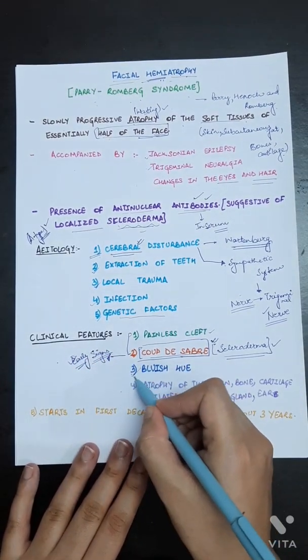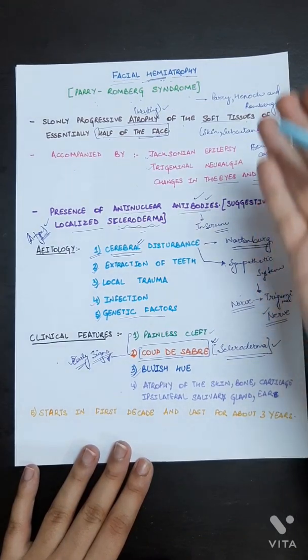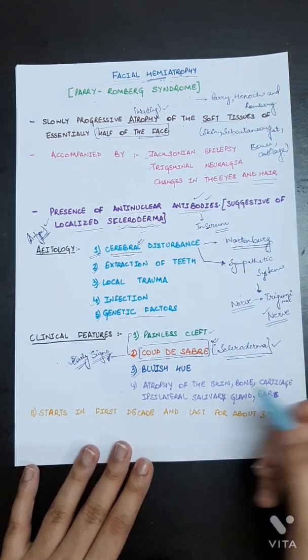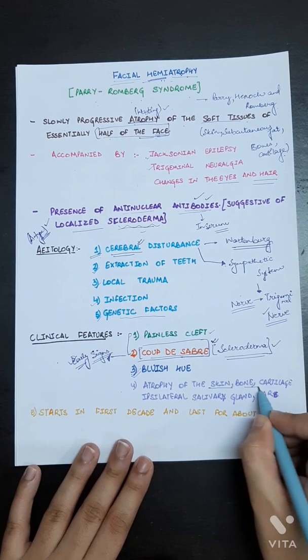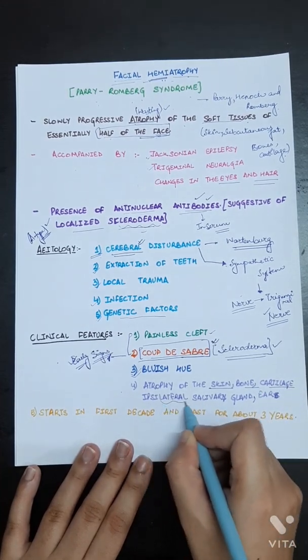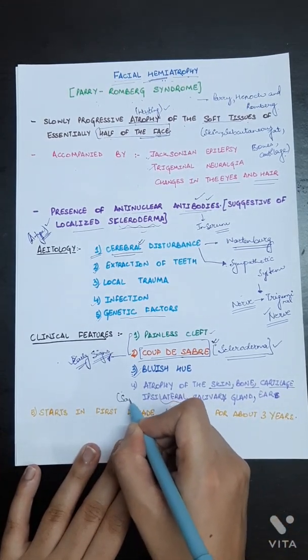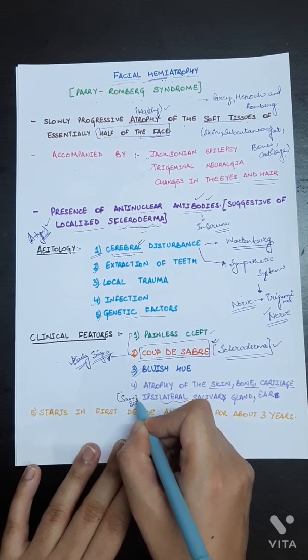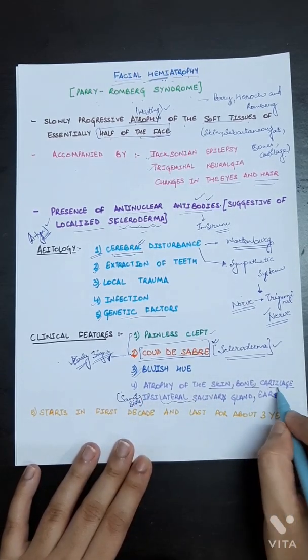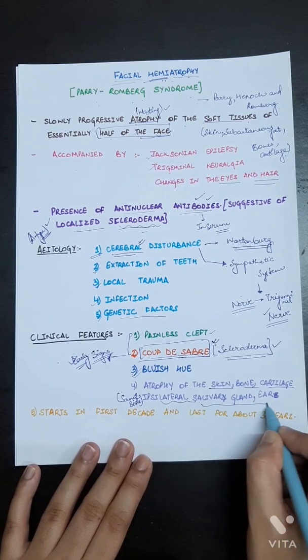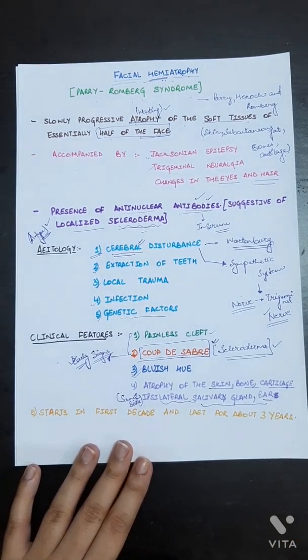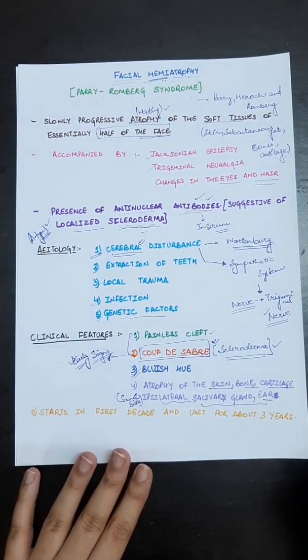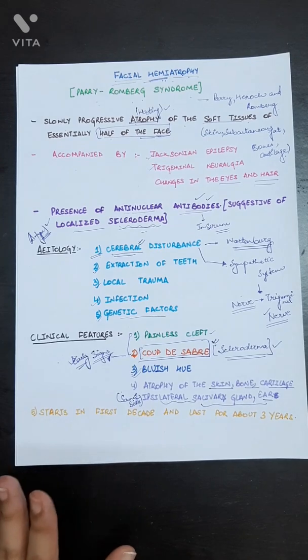Now bluish hue can be seen in these patients. Atrophy of the skin, bone, cartilage of the ipsilateral—ipsilateral means of same side—were seen. Also salivary glands and ears were involved.